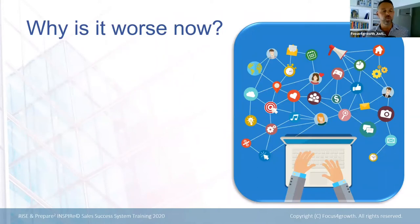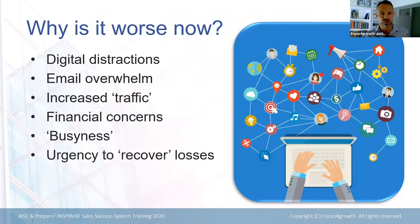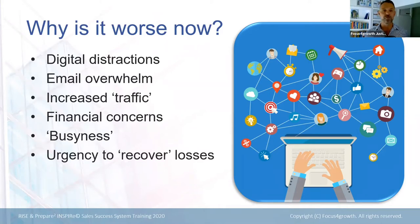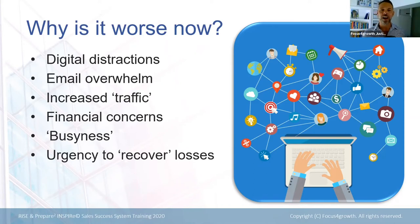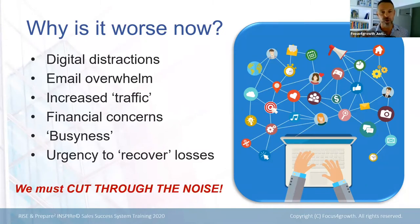Why is it worse now? It was worse before COVID-19, but it's worse now because there are more digital distractions than ever. Social media has gone mad, time online has gone up, emails have increased. There's a general increase in traffic because everybody's trying to get their message out, people have real financial concerns, and we are busier than ever. We've got to cut through the noise, because if we don't we're just going to be background noise amongst all of this other stuff.